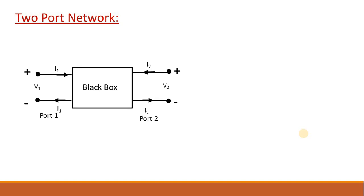To understand two-port network, if you just draw a black box diagram, then it will be very easy to understand it. From this black box diagram, you can get an idea that for a two-port network we will have four terminals — that is, a pair of two terminals. So any circuit which has four terminals can be represented as a two-port network.